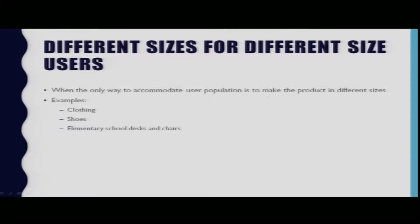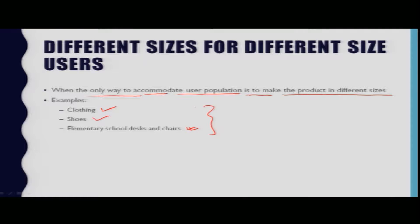Another category is designing different sizes for different users. In some product situations, the only way to adequately accommodate the user population is for the same product to be made available in different sizes. Important examples of this situation include clothing, shoes, and elementary school desk chairs.